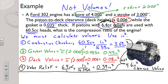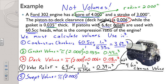Now we have one more thing we need, and that is our swept volume — we know how to calculate that. Our swept volume is the displacement of one cylinder. So our swept volume is pi times the radius of the cylinder, 2.000 inches squared, multiplied by our stroke of 3 inches. That turns out to be 37.70 cubic inches.